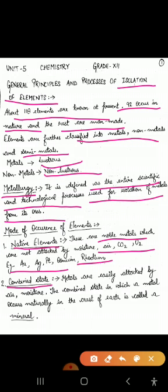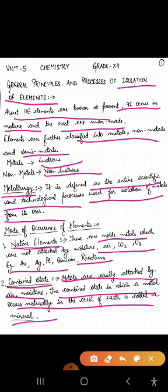Other elements are present in the combined state because they are very reactive. They react with other substances and are present as oxides, carbonates, silicates, sulfides, sulfates, nitrates, phosphates, etc. Metals that are very reactive are present in the combined state. Most metals occur naturally in the earth's crust in the combined state, and this is called the mineral.